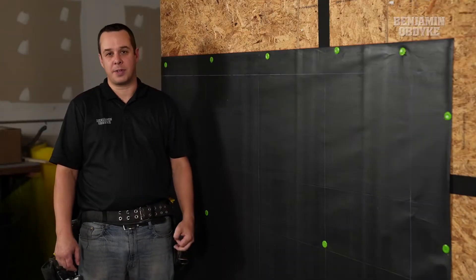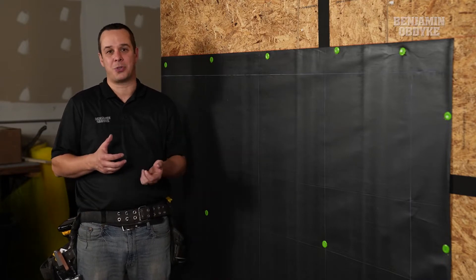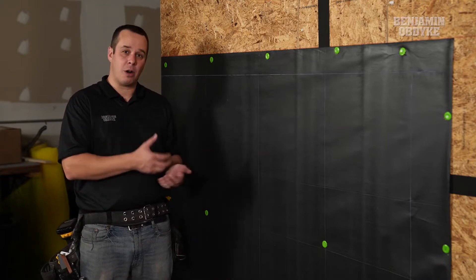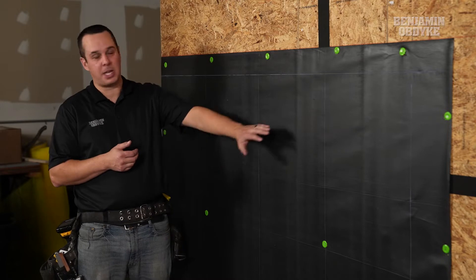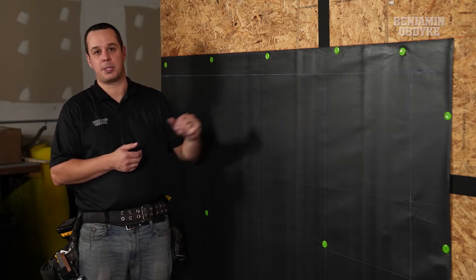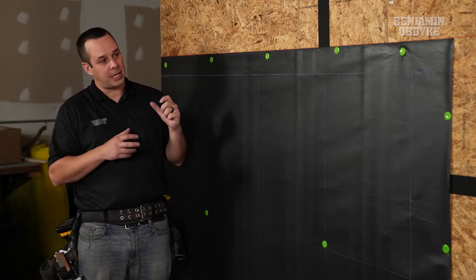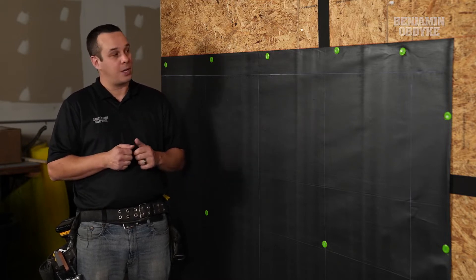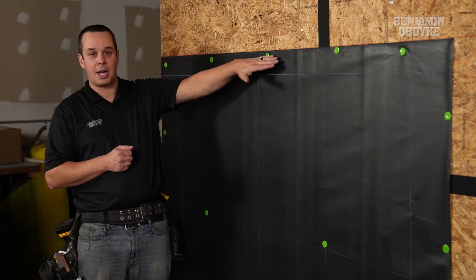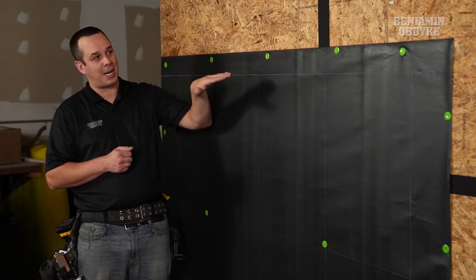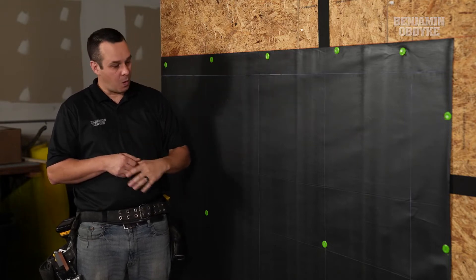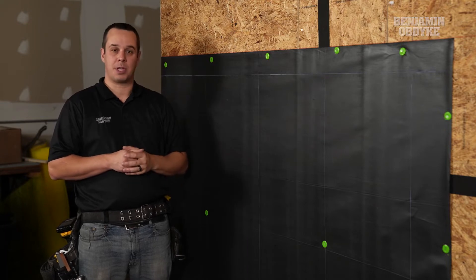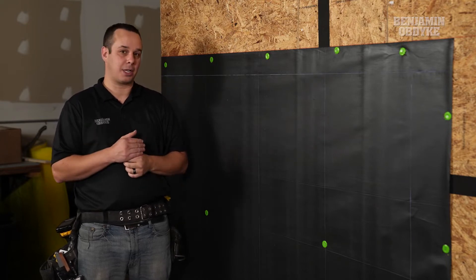With the installation of InvisiWrap, it is critical to understand that it's our water control layer, but we're also going to be able to see this through the open joint spaces. We want to look at the fastener location to a higher standard than a conventional wrap. We want to try to hide as many of these cap fasteners behind our overlaps or behind our batten strips that we're going to put on for the installation of our cladding.